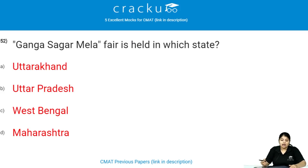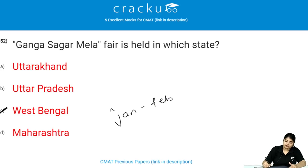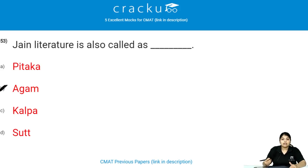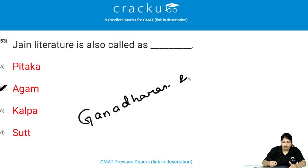Gangasagar Mela fair is in West Bengal state of India, held in January to February. Jain literature is also called Agam literature; it is compiled by Ganadharas and Shrut Kevalis.